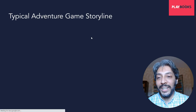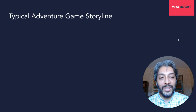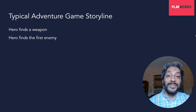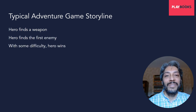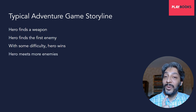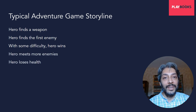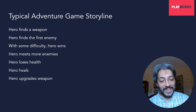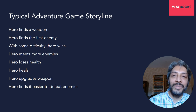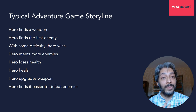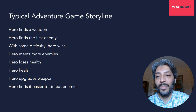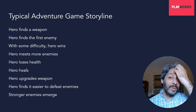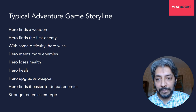This story is a very typical adventure game storyline. It's typical because a hero finds a weapon, fights the first enemy with some difficulty, wins, meets more enemies, loses health, heals, upgrades their weapon, and finally finds it easier to defeat enemies — until the enemies become stronger and the hero has to go through this upgrade loop all over again. Stronger enemies always emerge, trying to defeat you, so you have to become stronger.